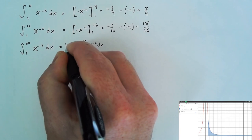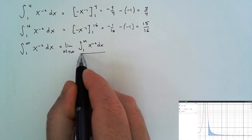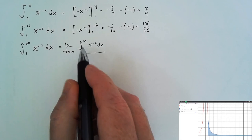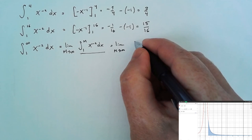This integral is a proper integral. We have a function that's bounded on the interval from 1 to m, and the interval from 1 to m is a finite interval. But if we evaluate this definite integral as we did before, we can now take the limit as m goes to infinity, and we get an answer of 1.